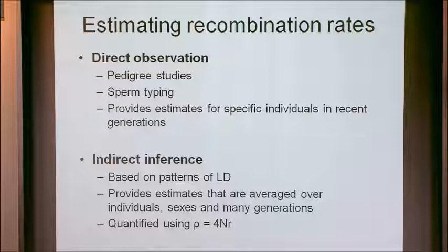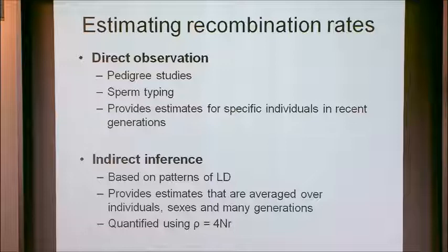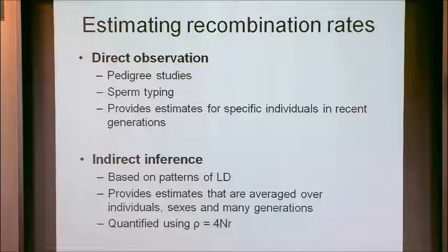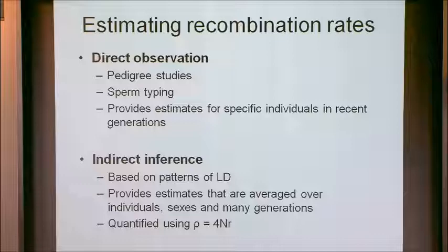There are different ways of estimating recombination rates — analogous to what Molly talked about yesterday with mutation rates. Direct ways involve looking at pedigrees or sperm typing studies. These methods can provide estimates of recombination in specific individuals in very recent generations. The other approach is indirect, based on patterns of linkage disequilibrium, and can be thought of as averaging over lots of individuals over evolutionary time scales of one to two million years, over both sexes and many generations.